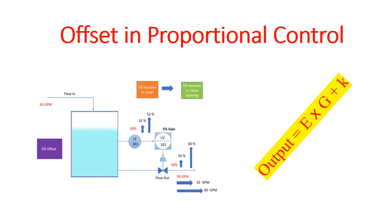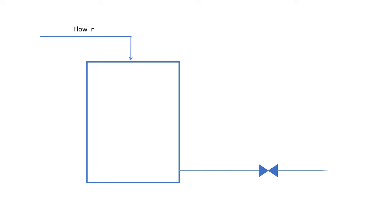So let's begin. Like the last case, we will take one vessel as an example. There is an inlet line to the vessel and an outlet line. In the outlet line, there is a control valve which controls the flow through the outlet line.